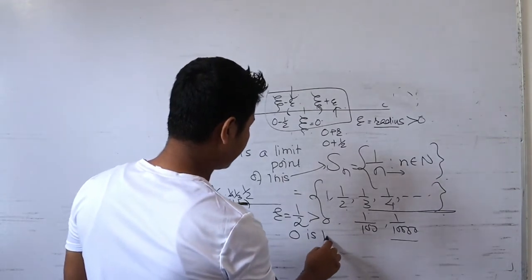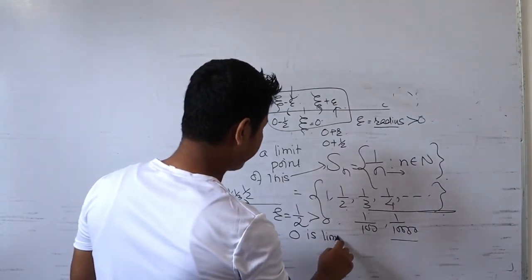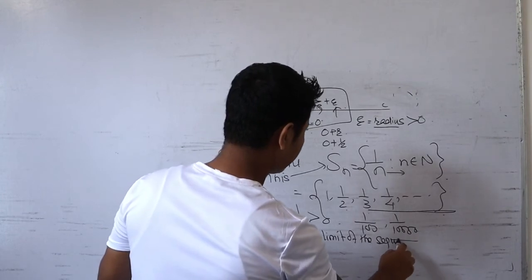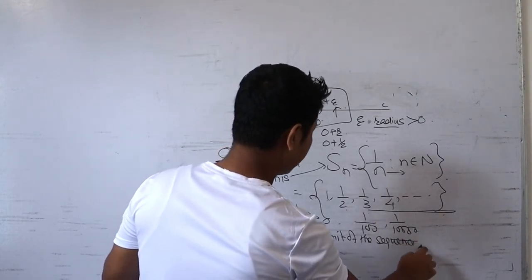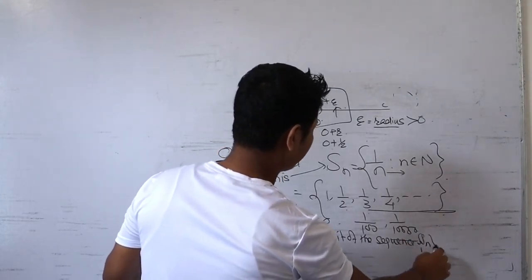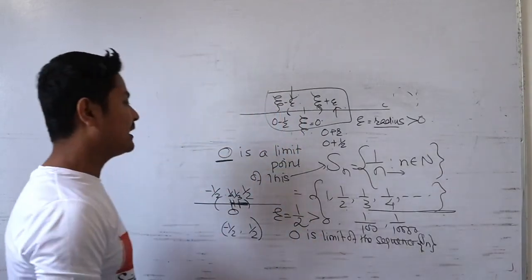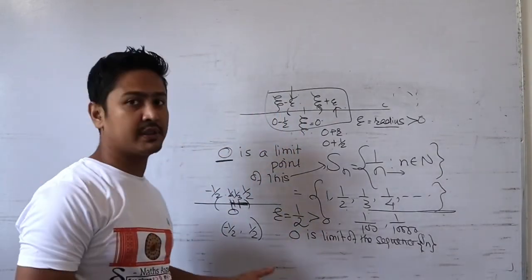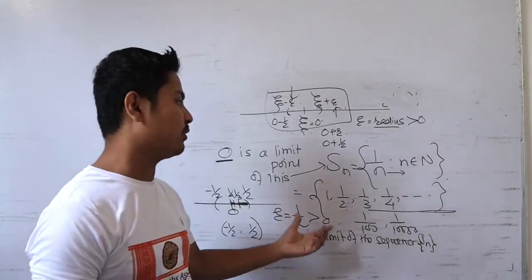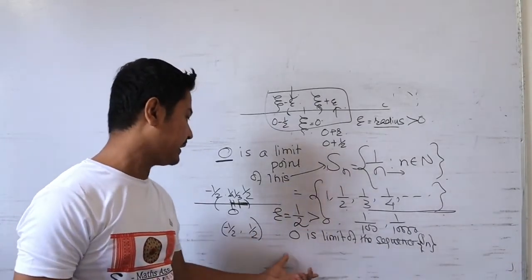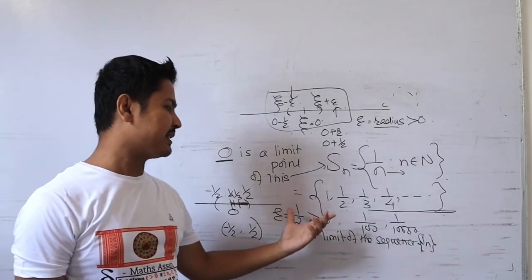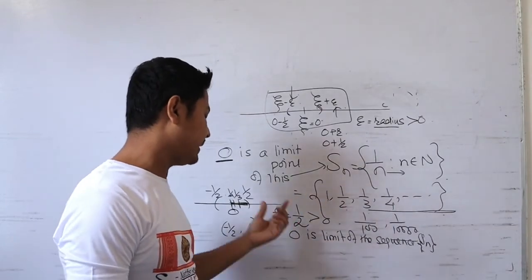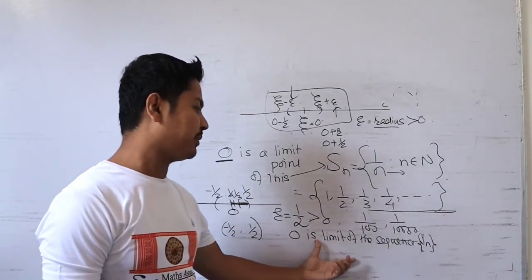By the definition of limit point, zero is a limit point of this sequence. In this way, you can verify the other members also — whether those members are limit points of the sequence. So zero is confirmed as a limit point of the sequence Sn = 1/n.